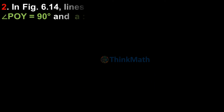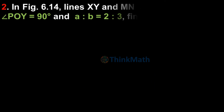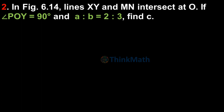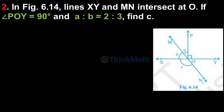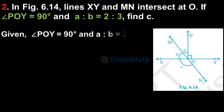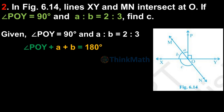Question 2: In figure 6.14, lines XY and MN intersect at O. If angle POY equal to 90° and A is to B equal to 2 is to 3, find C. Given: angle POY equal to 90° and A : B equal to 2 : 3.